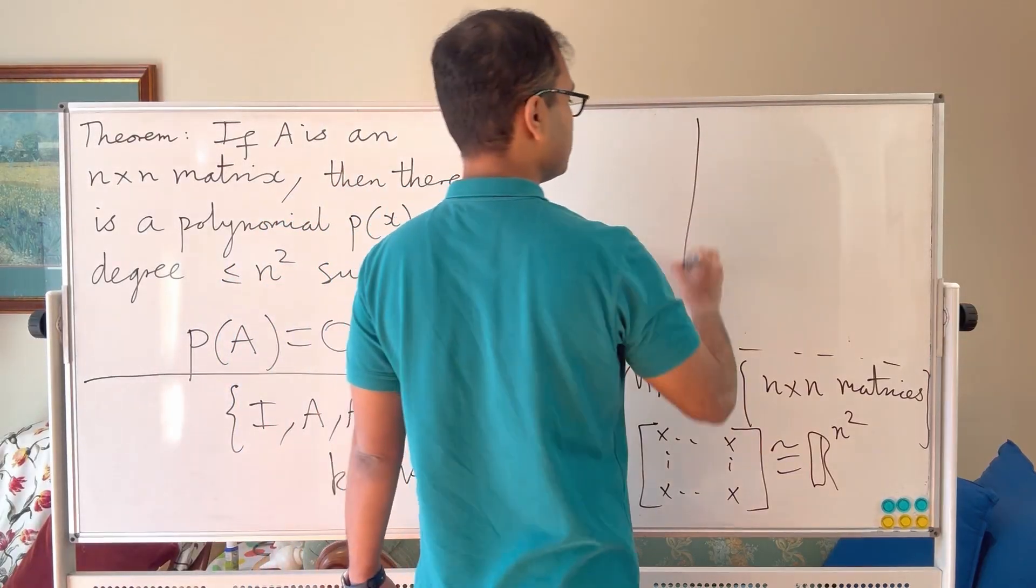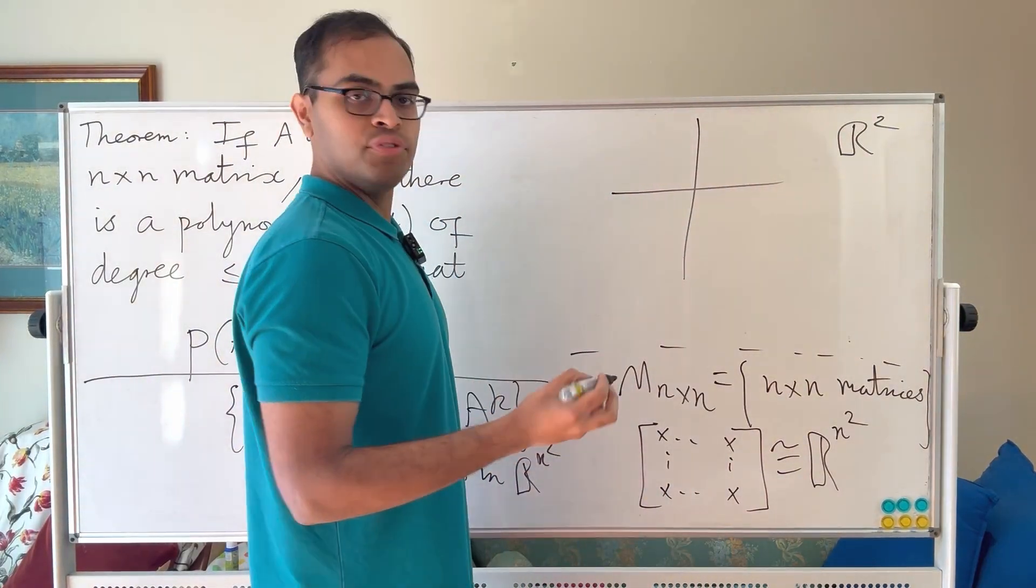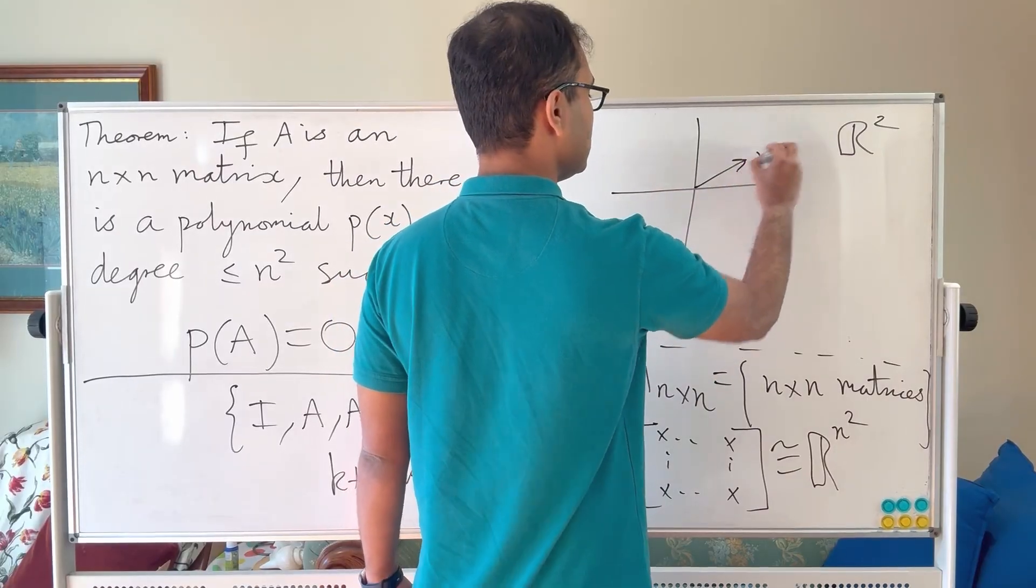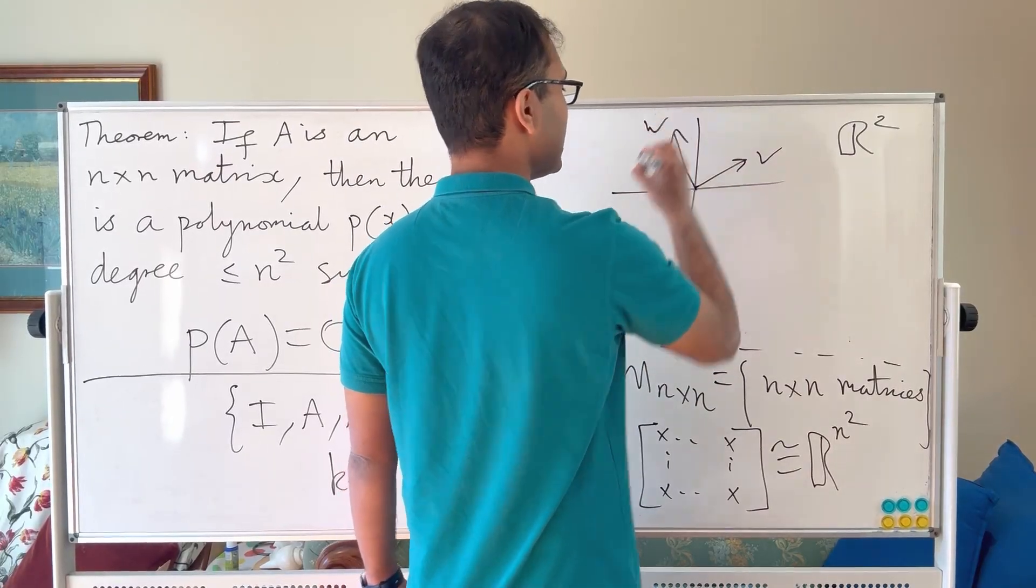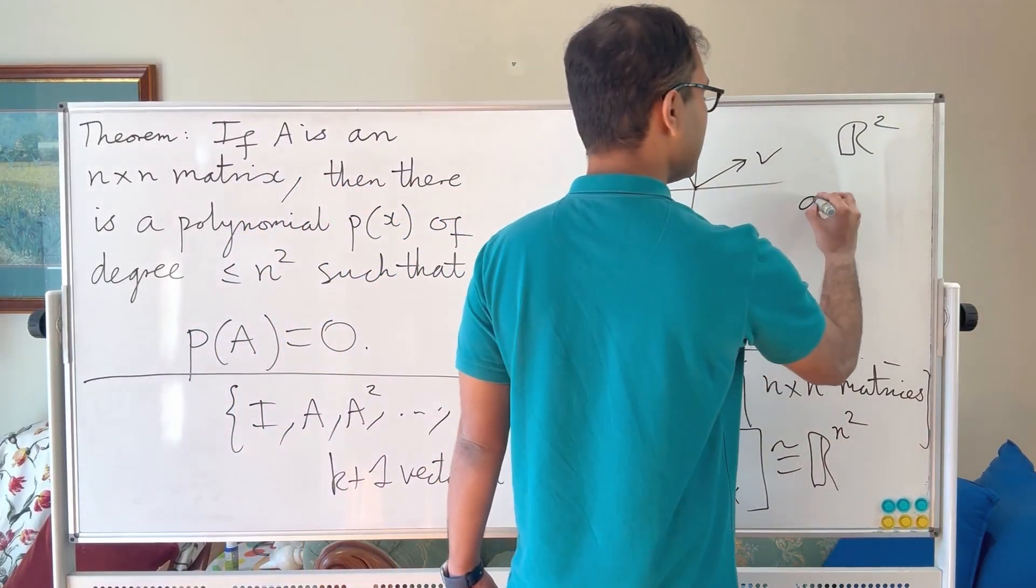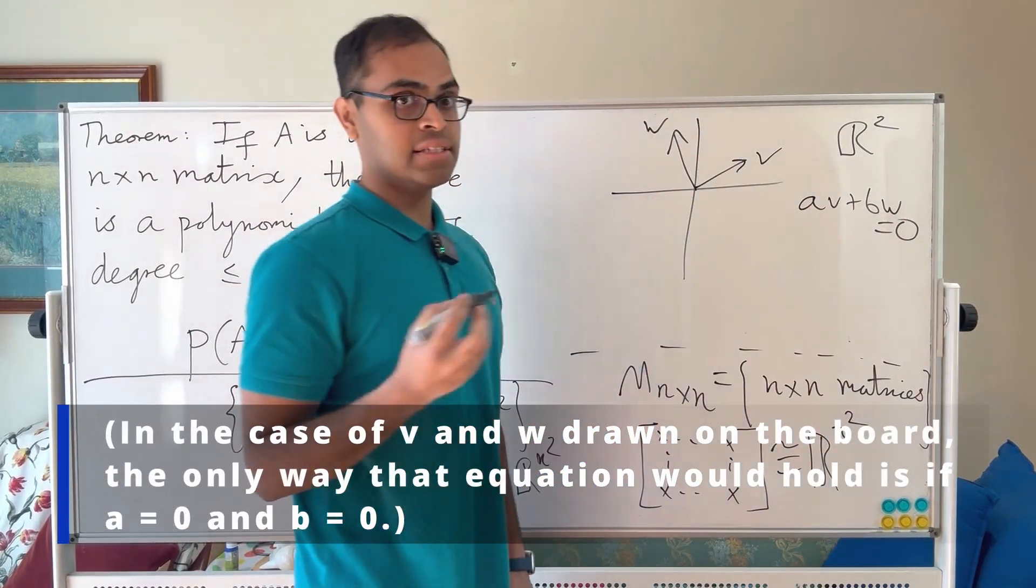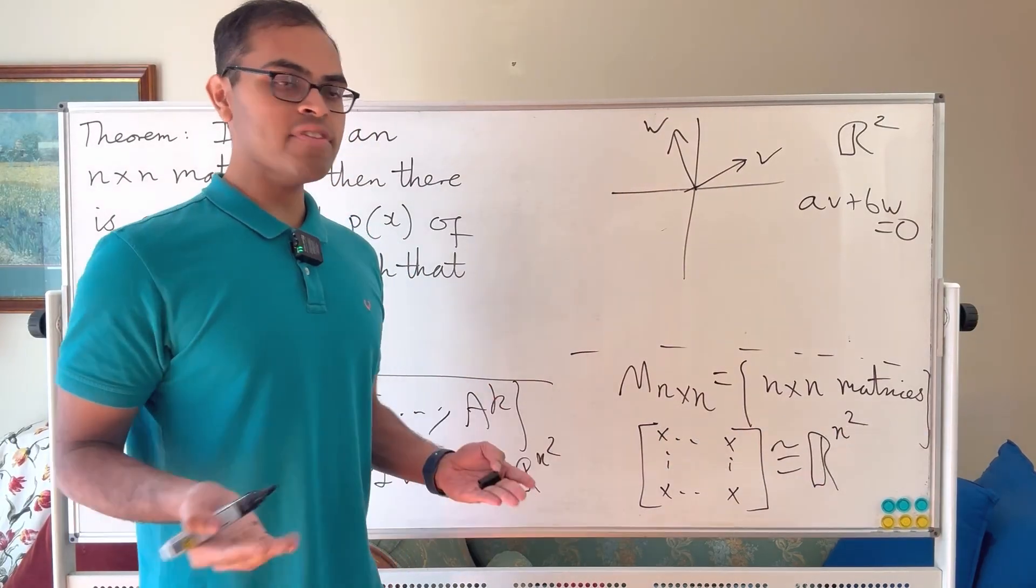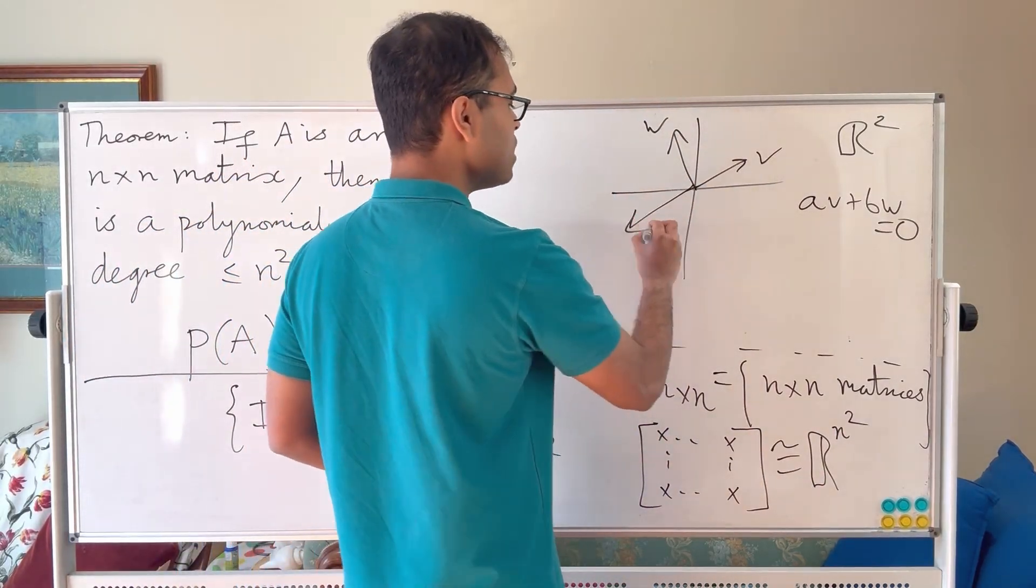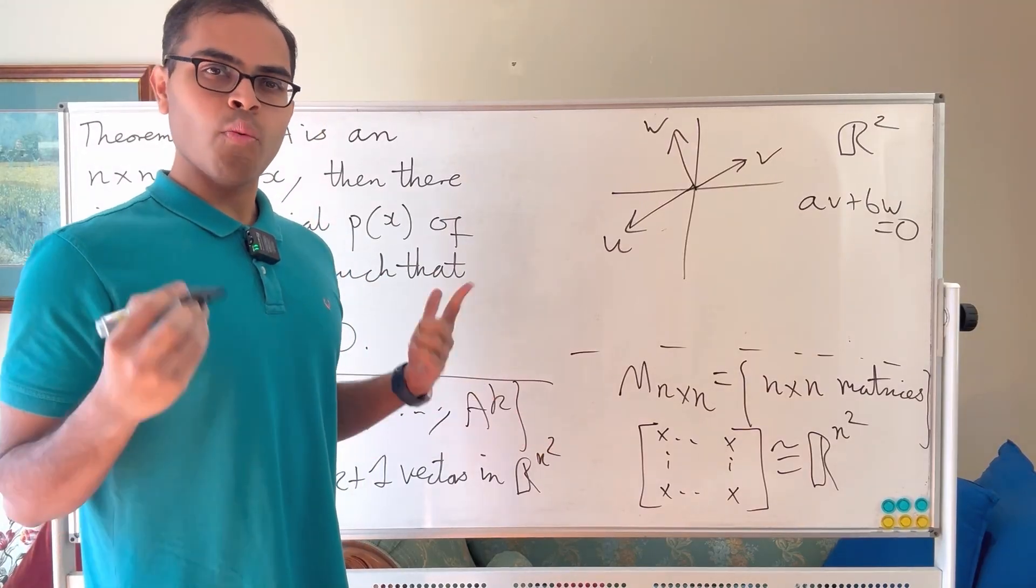So a nice example is if you just think about the plane R^2, if you have two vectors v and w, then you may not be able to find a relationship between them of the form a v plus b w is equal to 0, where a and b are scalars. On the other hand, if you have a third vector u, you can always find a relationship between u, v and w. Why is that?